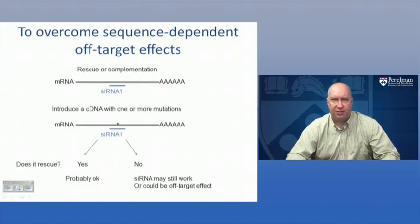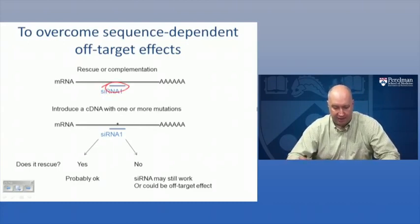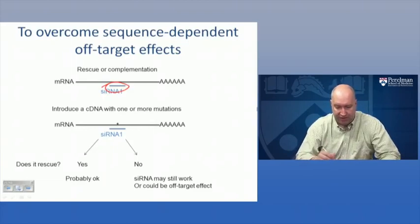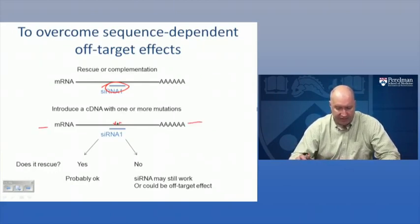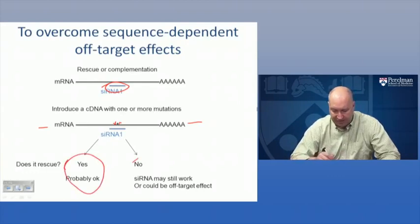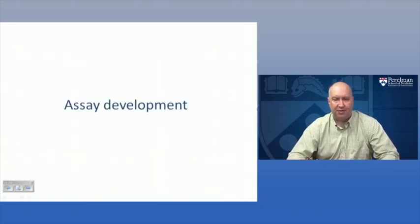The second method to overcome off-target effects is rescue or complementation of your phenotype. You'll have one single siRNA that gives an effect, and you'll introduce a cDNA with one or more mutations in the targeted mRNA. If this rescues the siRNA phenotype, it's probably an on-target effect. If it doesn't rescue the RNAi phenotype, the siRNA may still work to target the mRNA - sometimes you have to put in more than one mutation - or it could be an off-target effect.